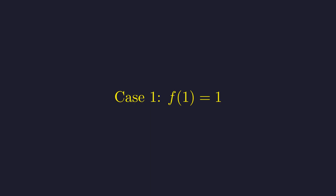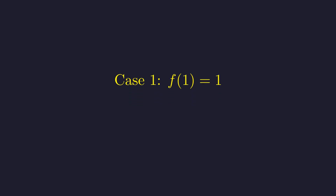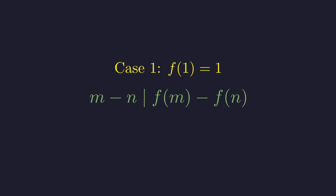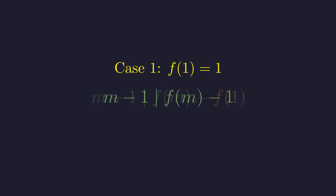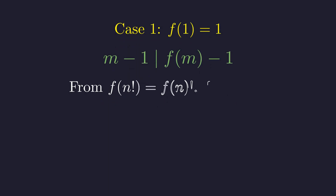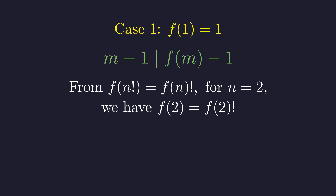Let's start by exploring the case where f(1) = 1. Using the second condition with n fixed at 1, we get that m minus 1 must divide f(m) minus f(1) for any m. Since f(1) = 1 in this case, for any integer m greater than 1, m minus 1 divides f(m) minus 1.